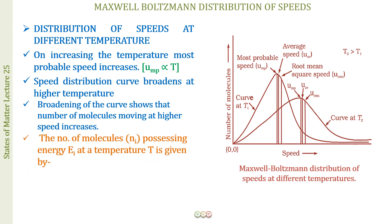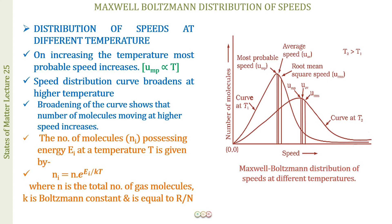The total number of molecules possessing energy Ei at a temperature T is given by the relation: ni = n · e^(−Ei/kT), where n is the total number of gas molecules and k is the Boltzmann constant, which equals the gas constant R divided by Avogadro's number. You just need to remember this relation; a derivation is not required in your curriculum.